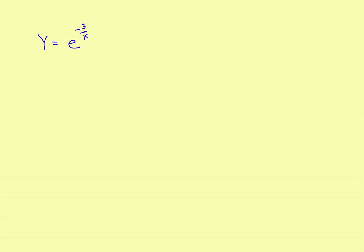Let's take a look at this next one. Sometimes you have to rewrite them first. My suggestion before we try to find the derivative is to go ahead and rewrite it. Think of it as x to the positive one in the bottom, so move it to the top and make it x to the negative one. So this is like having negative three x to the negative one. If you write it like that, it'll keep you away from the quotient rule. So the derivative, y prime, would be equal to — first of all it's the original function — e to the negative three x to the negative one, now times the derivative of the exponent. The derivative of that: if you bring the negative one down, it'll turn into a positive three x to the negative two.